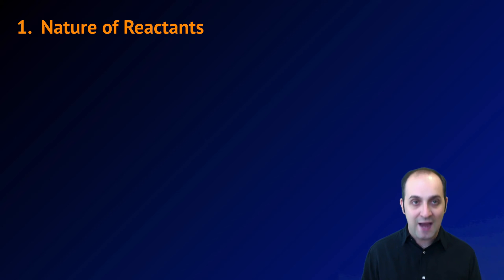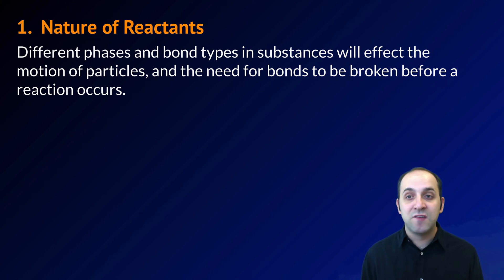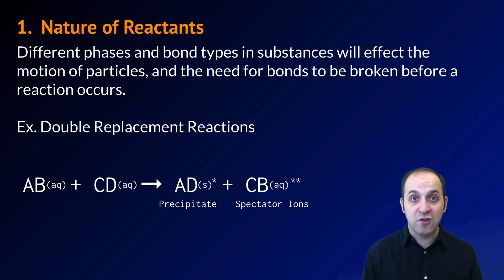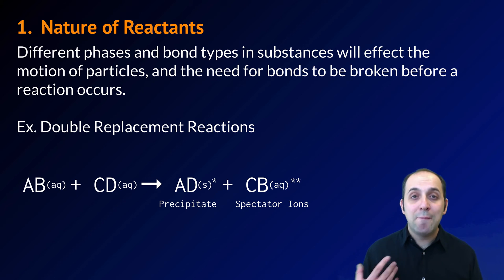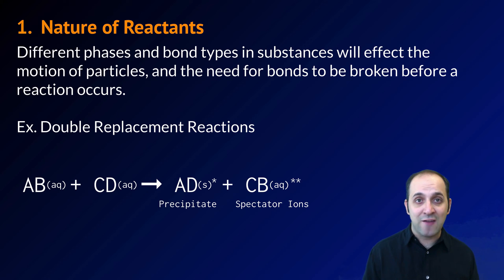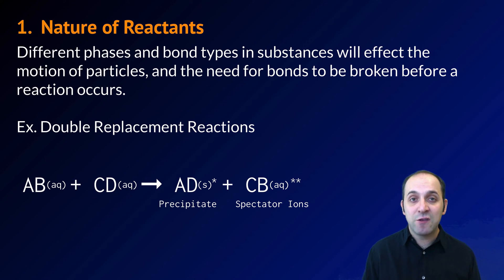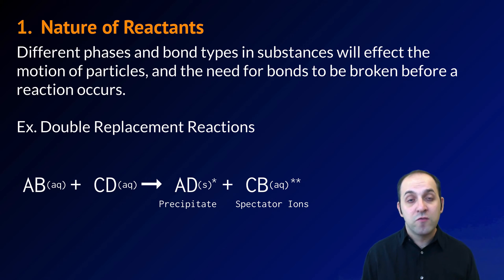Our first example is changing the nature of the reactant. Different phases of substances and different bond types are going to affect how many reactions can happen in a particular period of time. A good example of this are double replacement reactions. In a double replacement reaction, the substances had to be dissolved in water in order for the ionic bonds in our precipitate to form. Without those substances being dissolved in water, we really wouldn't get very much of the reaction happening at all. So by being dissolved in water, the reactions happen considerably faster. This is also true of most of the chemistry in your body — the chemistry is solution-based, and substances have to be dissolved and surrounded by water molecules in order for reactions to happen at the rates typical of living things.